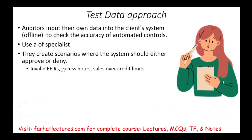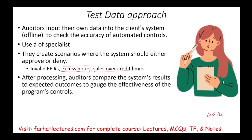We will also try to input excess hours — for example, if each employee should work a maximum of 40 hours, we put in more to see if the system will accept it. Or we process a sales order over the credit limit to see if it accepts it or not. After processing, the auditor compares the system's results to the expected outcome to determine the effectiveness of the control — anything that should not be accepted should be rejected.